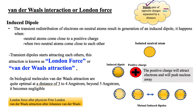What do you mean by an induced dipole? The transient induced dipole is the transient redistribution of electrons on neutral atoms that results in the generation of an induced dipole. It happens when these neutral atoms come close to a positive charge, or when two neutral atoms come close to each other. For instance, when an isolated neutral atom comes close to a positive charge, the positive charge will attract the electrons on the neutral atom toward itself and push the nucleus away, ultimately creating a dipole environment on the neutral atom. This dipole is quite transient.